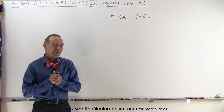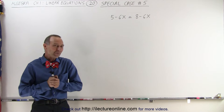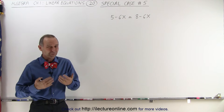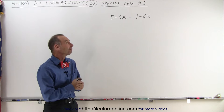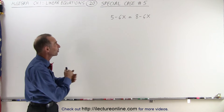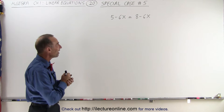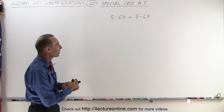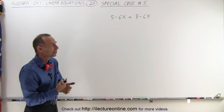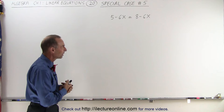Welcome to Electron Line. Here we have another special case — let's call it special case number 5. What if we have something that looks like this: 5 minus 6x equals 8 minus 6x.